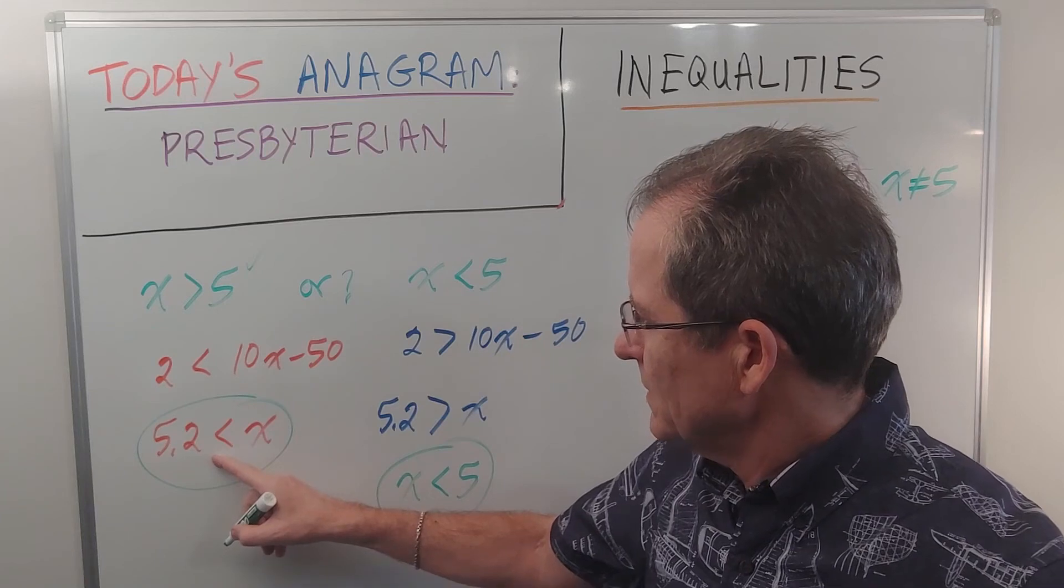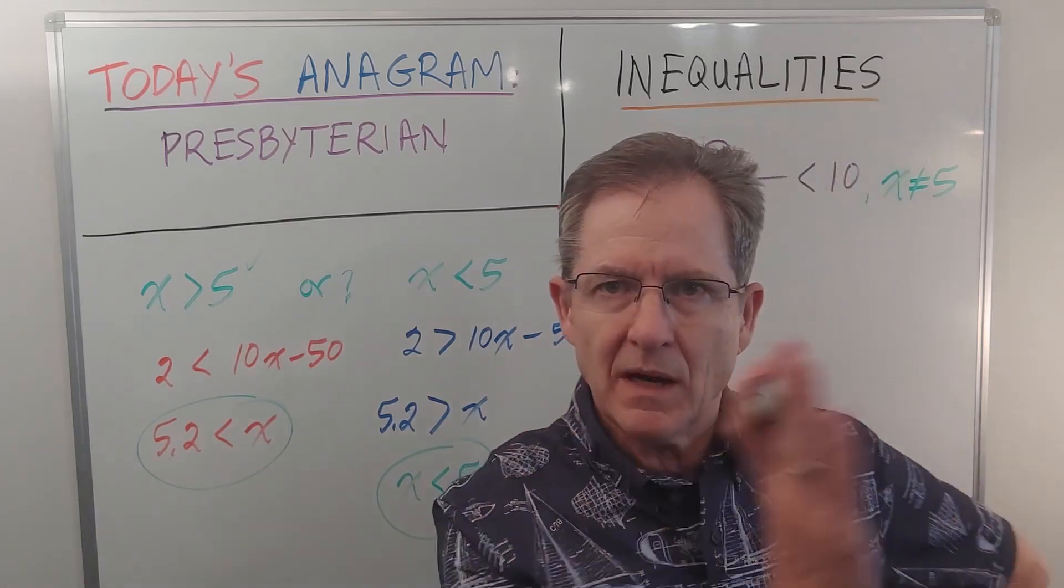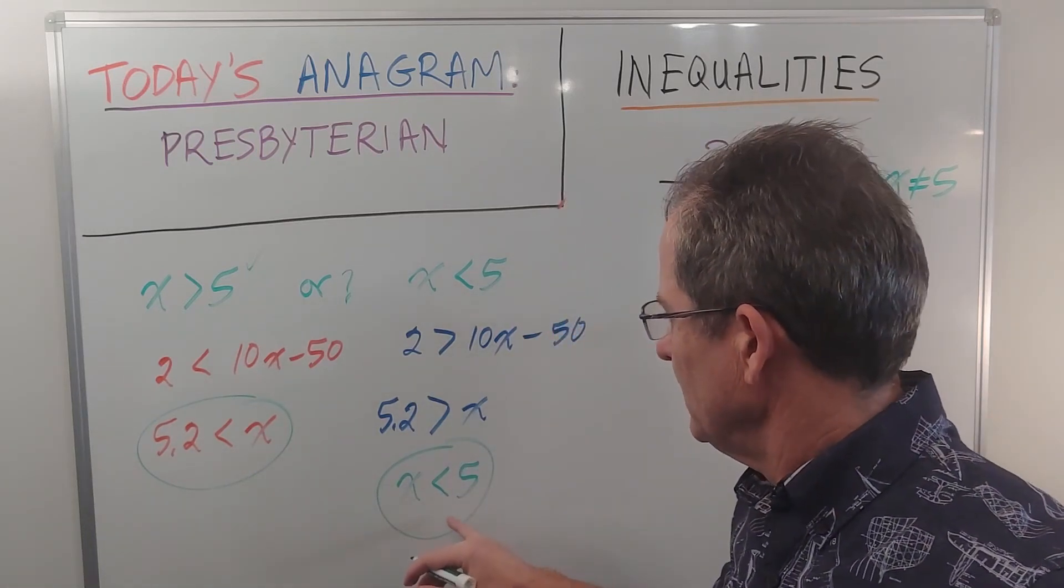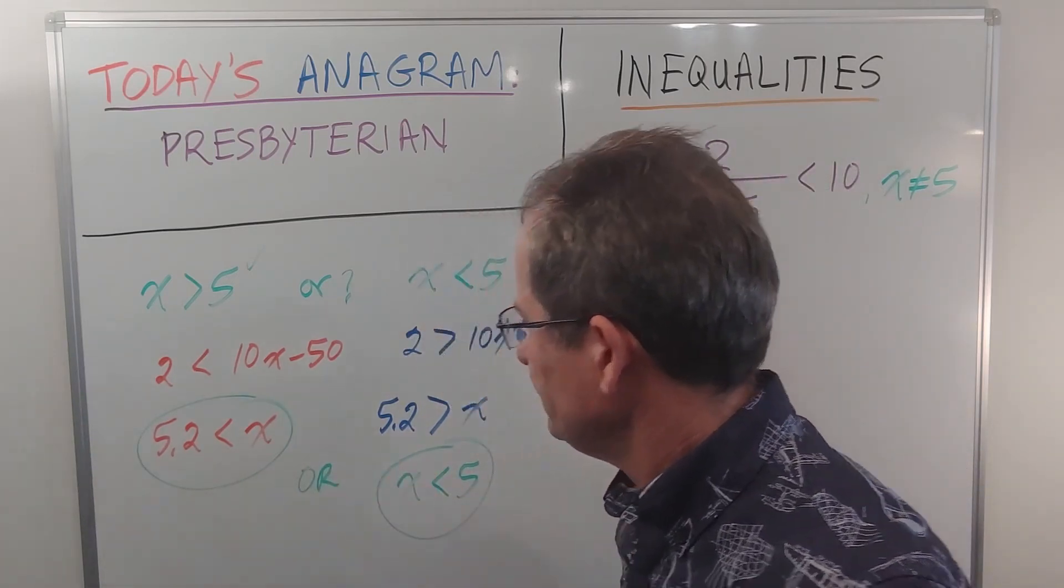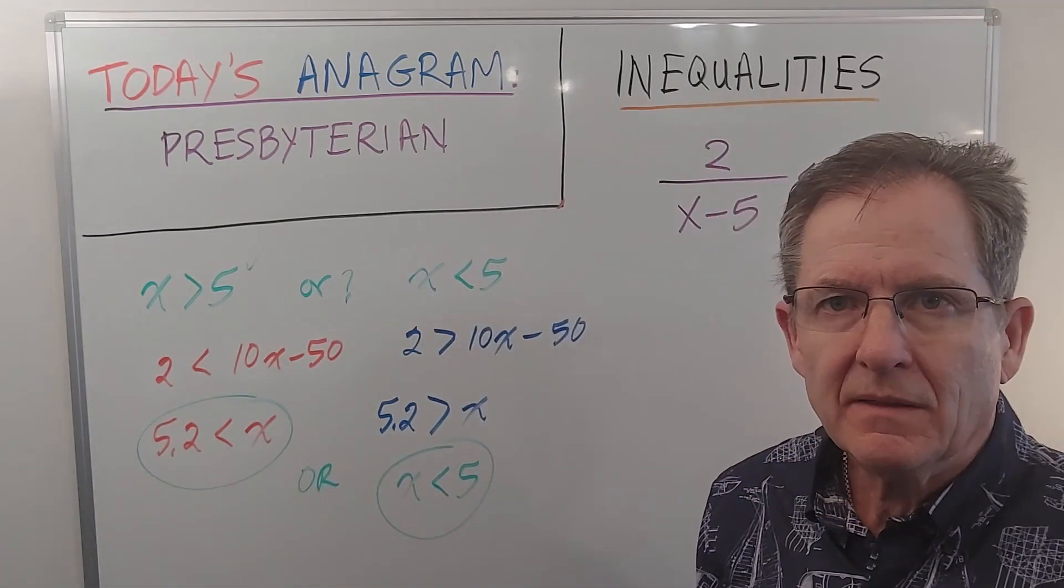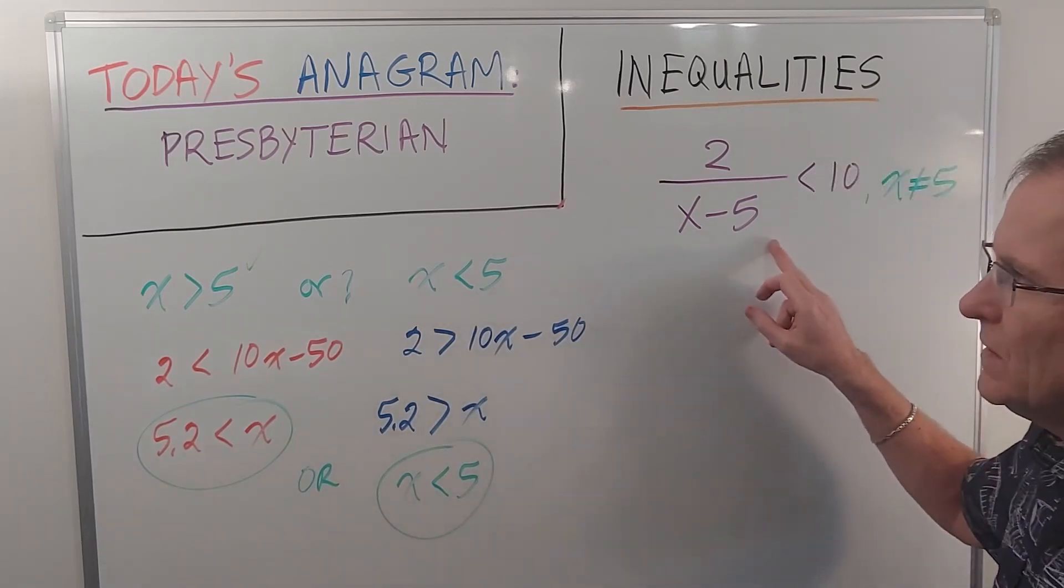So x is bigger than this number, which is to the right, or it's less than that number, which is to the left. So this indeed will be 'or'. That's the solution to this inequality.